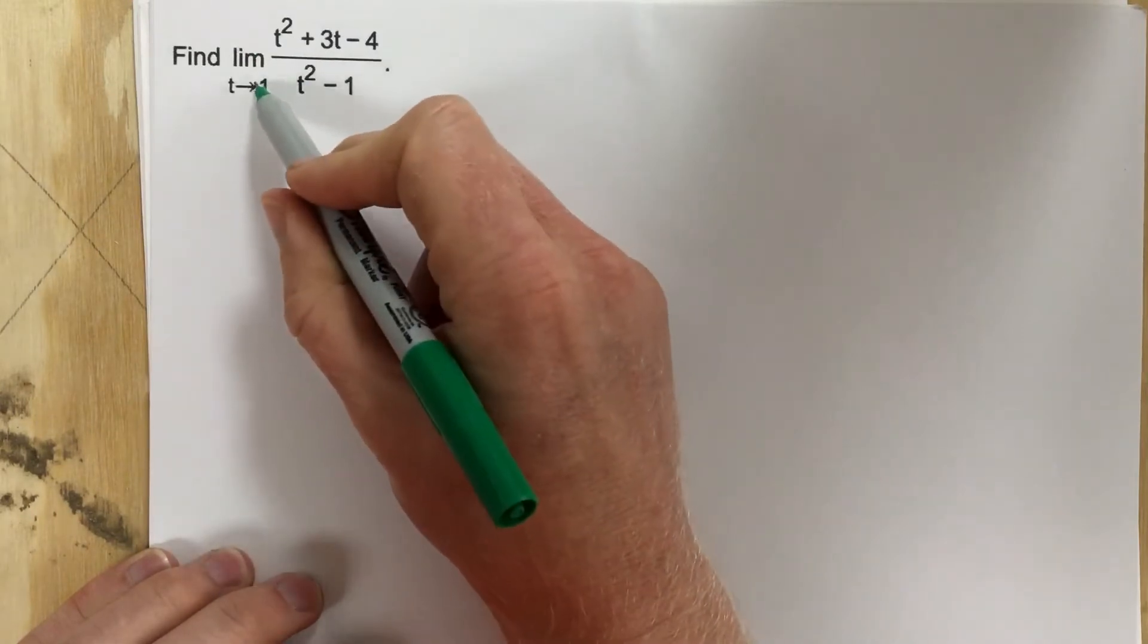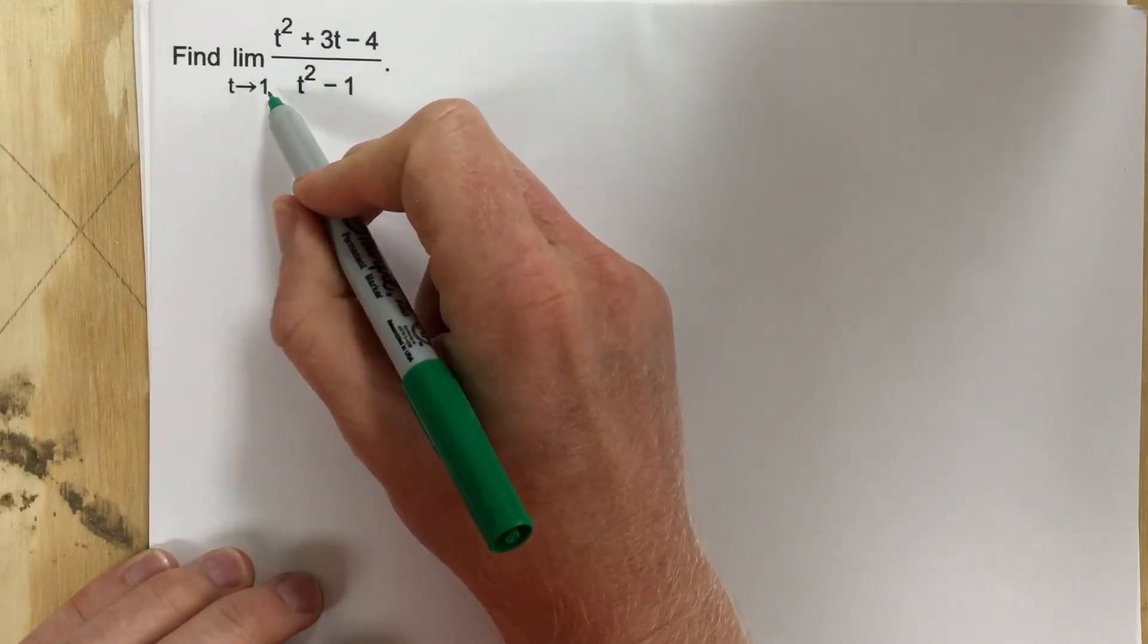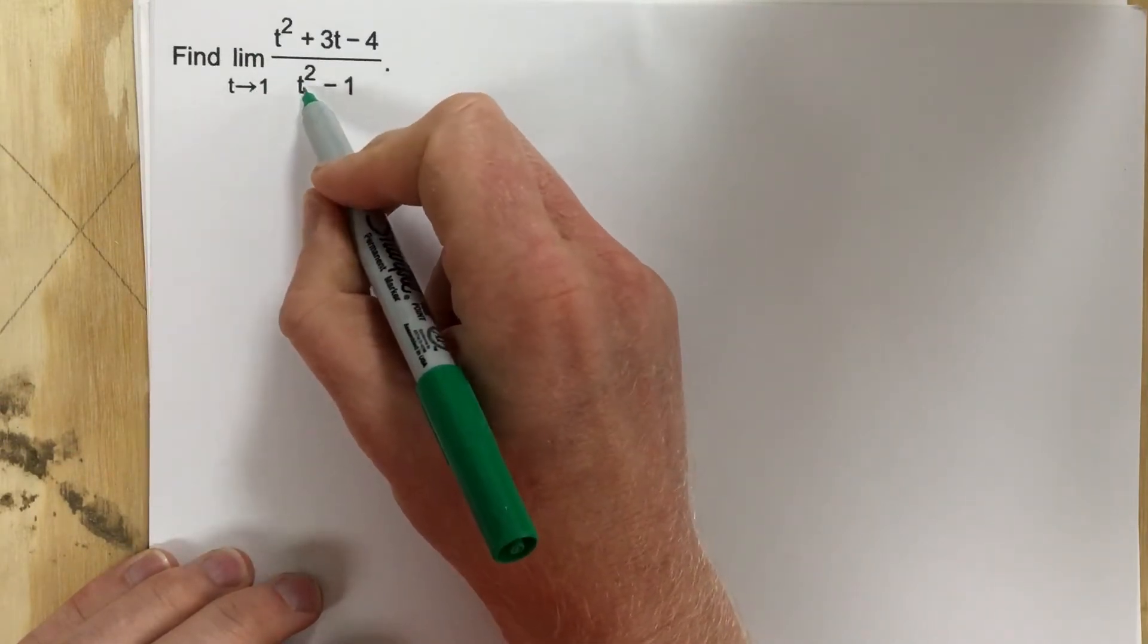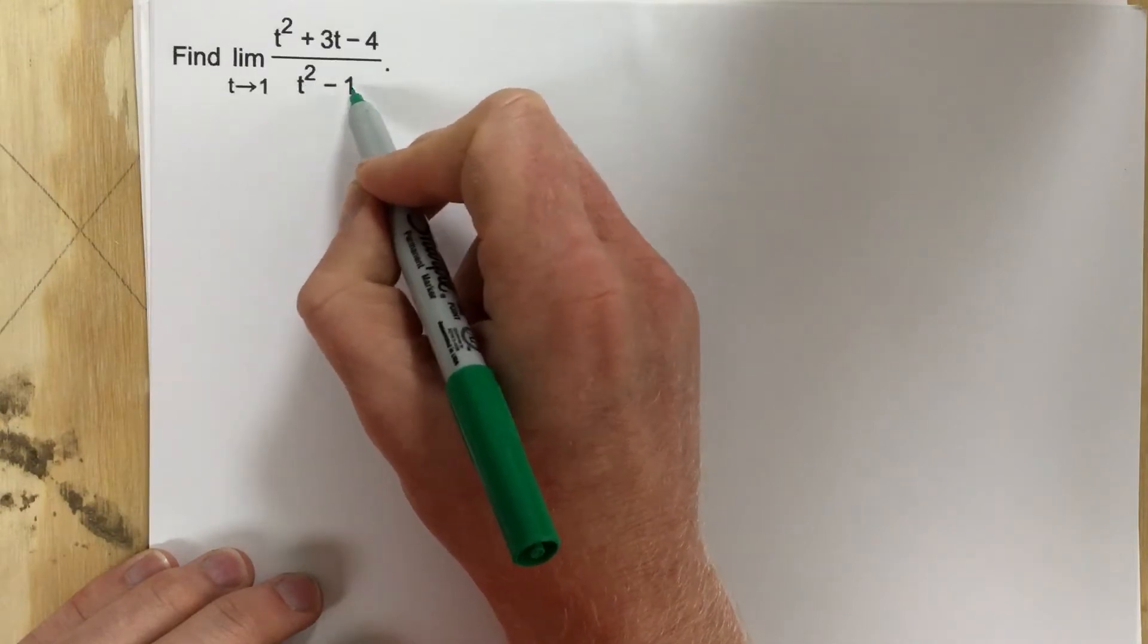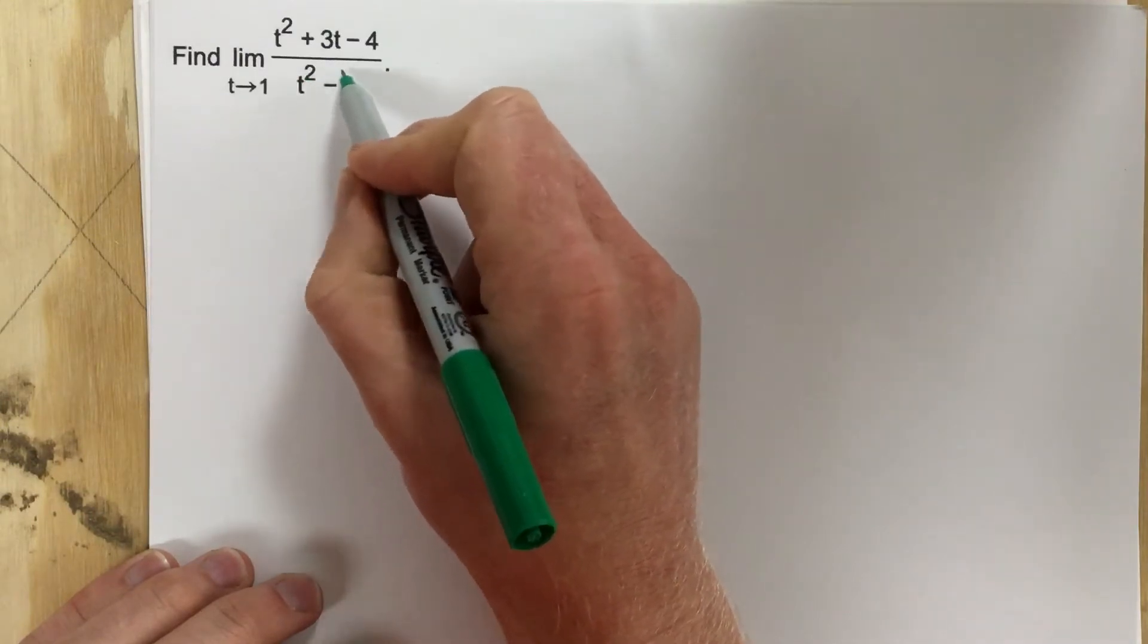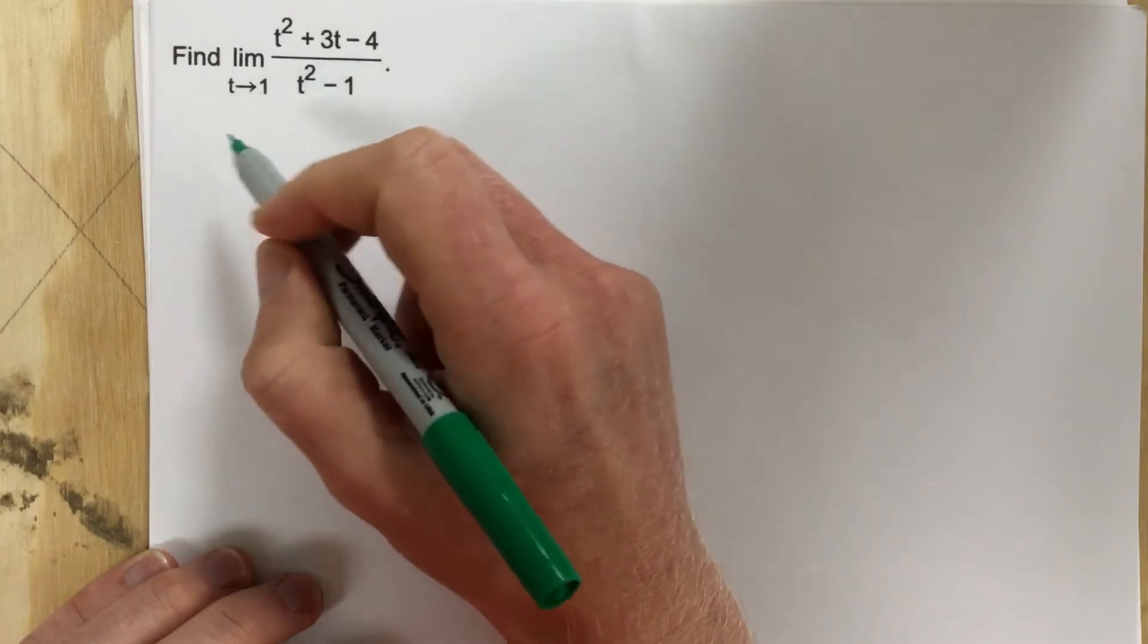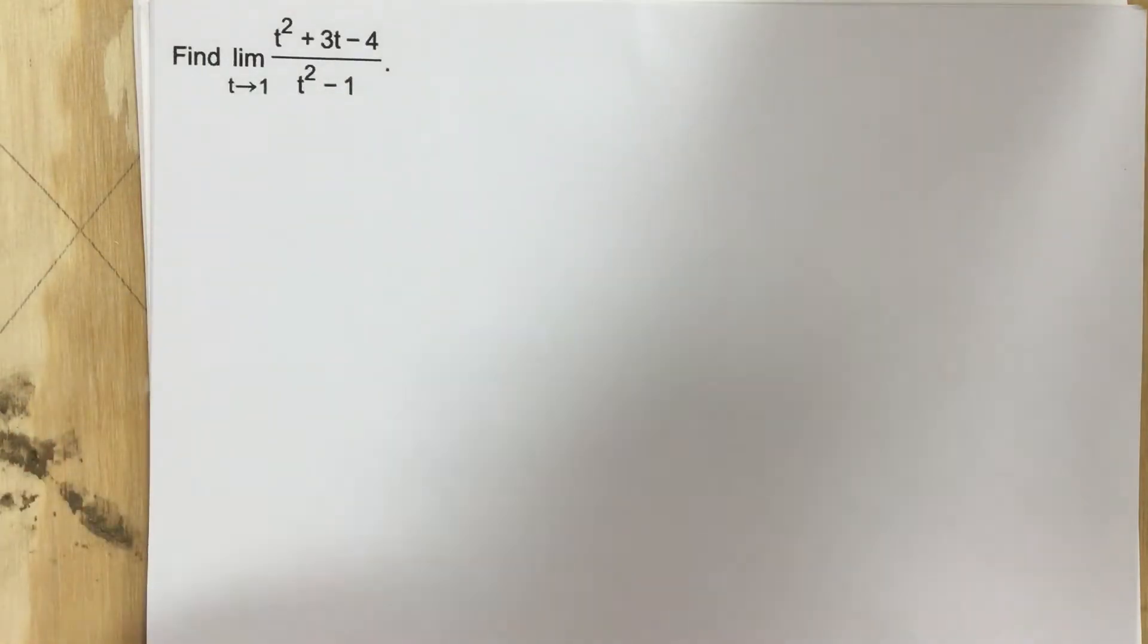First thing I want to do is check to see can I plug 1 directly into this. When I plug 1 in, I get 1 squared which is 1 minus 1, that's 0. This gives you 0, so you're dividing by 0, which means this function is undefined for t equal to 1.